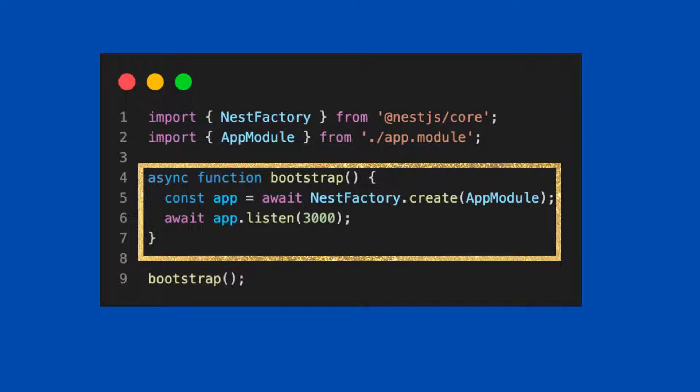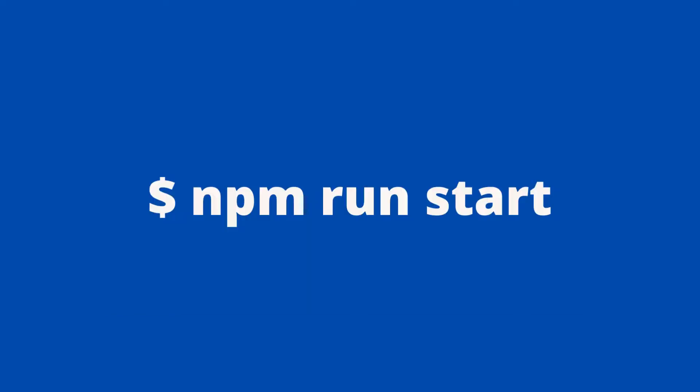On a high level, the bootstrap function creates a Nest application instance using the core NestFactory class. The NestFactory class is part of the NestJS core package and exposes a few static methods to create an application instance. The create method is one such static method — it takes the application root module as input and returns an app object using the iNestApplication interface. The app object has several methods we can use to control our application. Currently, we are interested in starting a basic HTTP listener using the listen method, which takes a port number as input and makes our application listen to incoming HTTP requests.